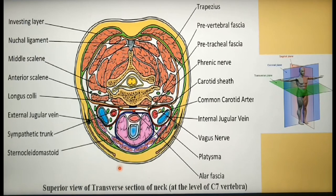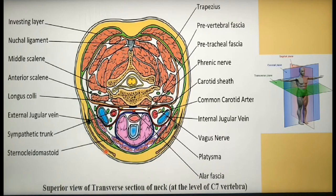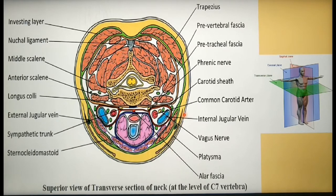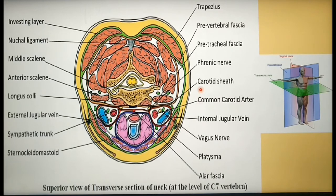To identify the structures, let us move from anterior to posterior. Anteriorly you can visualize the superficial cervical fascia with the platysma. This thin muscle over here is the platysma, and around it you have the superficial cervical fascia. Platysma is the limit of superficial cervical fascia. Beneath the platysma, you can identify the external jugular vein.